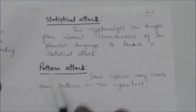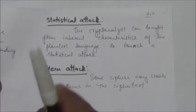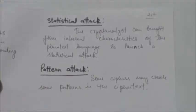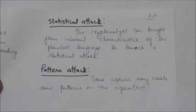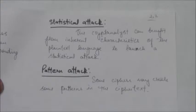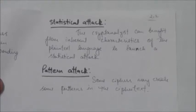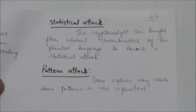In a statistical attack, the cryptanalyst can benefit from inherent characteristics of the plaintext language. For example, the letter 'e' is the most frequently used letter in English text, so the cryptanalyst will find the most frequently used character in the ciphertext and assume that the corresponding plaintext character is 'e'. After finding a few such pairs, the analyst can find the key.